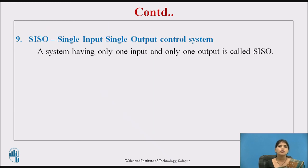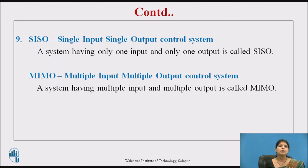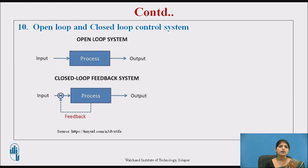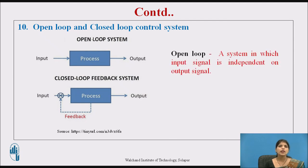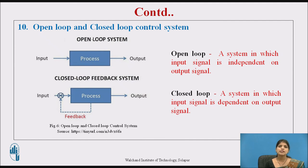Next are single-input single-output (SISO) control systems — systems having only one input and only one output. And MIMO means multiple-input multiple-output control systems — a system having multiple inputs and multiple outputs. This is an important classification of control systems: open-loop and closed-loop systems. Open loop means a system in which the input signal is independent of the output signal. Closed loop means a system in which the input signal is dependent on the output signal.